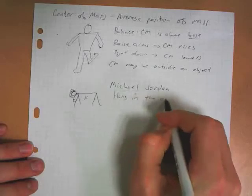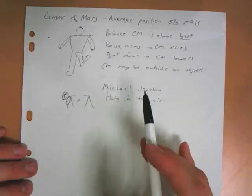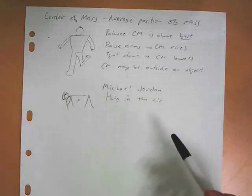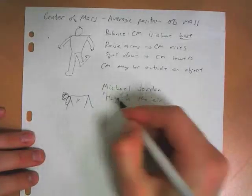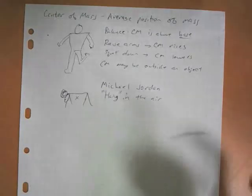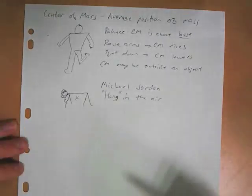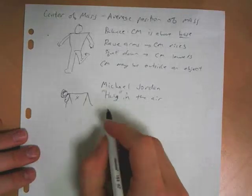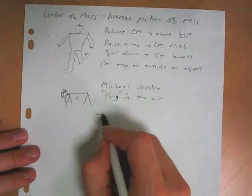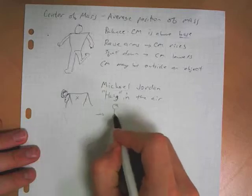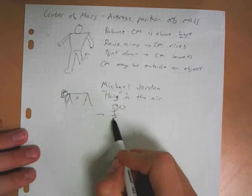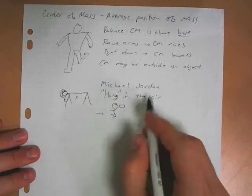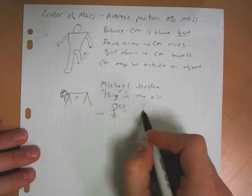He would jump and he'd be up there and the other players would look like they were coming to the ground faster and he was just kind of staying up there. Now we should know from physics that that's more or less impossible. You can't just float in the air, but what he would do is when he would first jump, he would have his legs tucked in. He'd have the ball here, his legs tucked up under him.